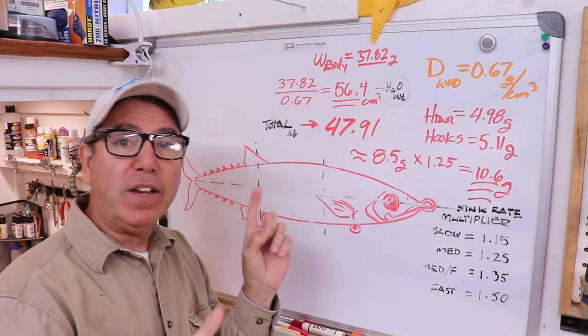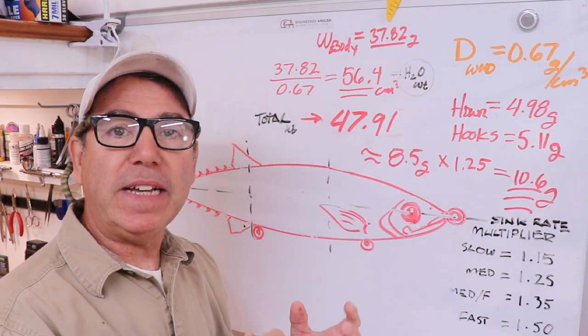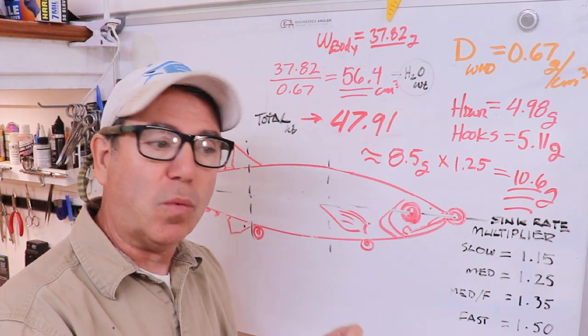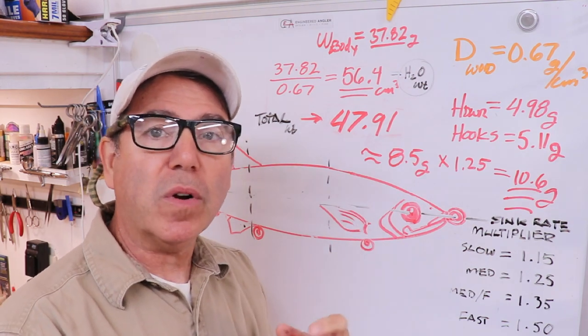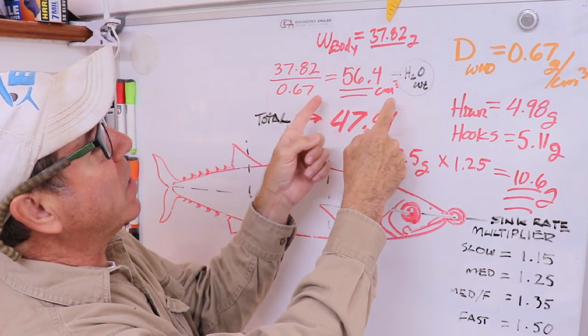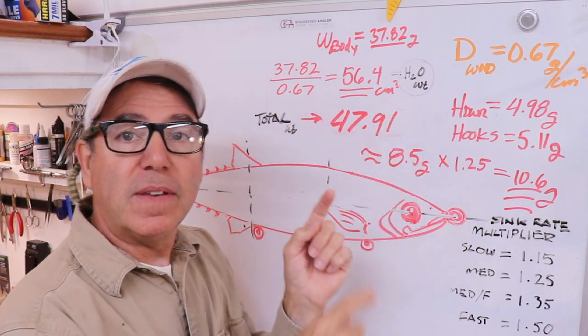Here's why: the volume of the actual body is the displaced volume of the water. So as I push that lure body into the water, it displaces exactly its own volume, and the weight of water per volume is 1 gram per cubic centimeter.